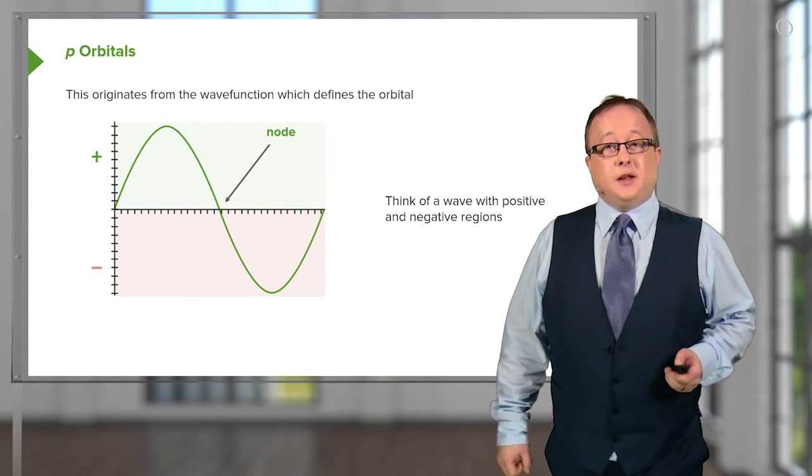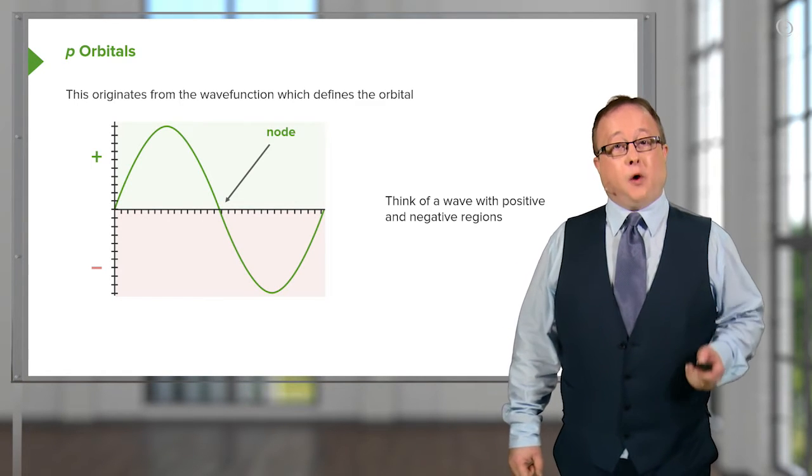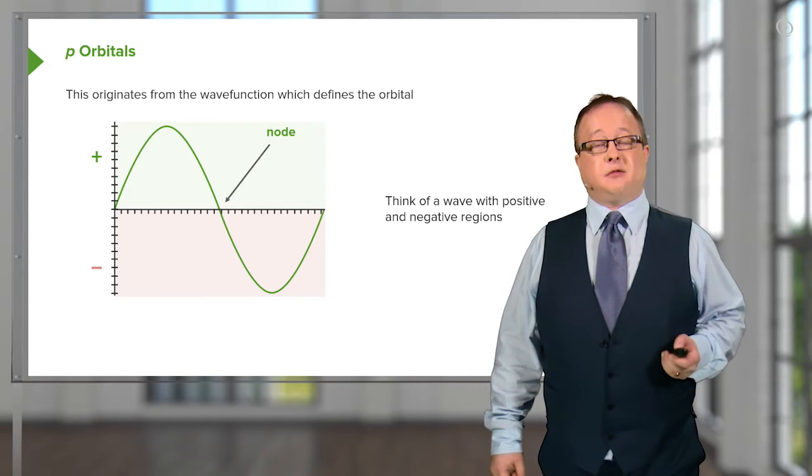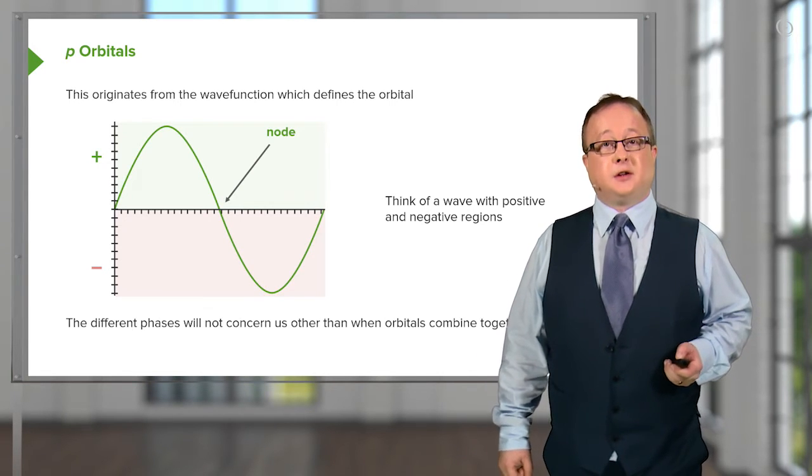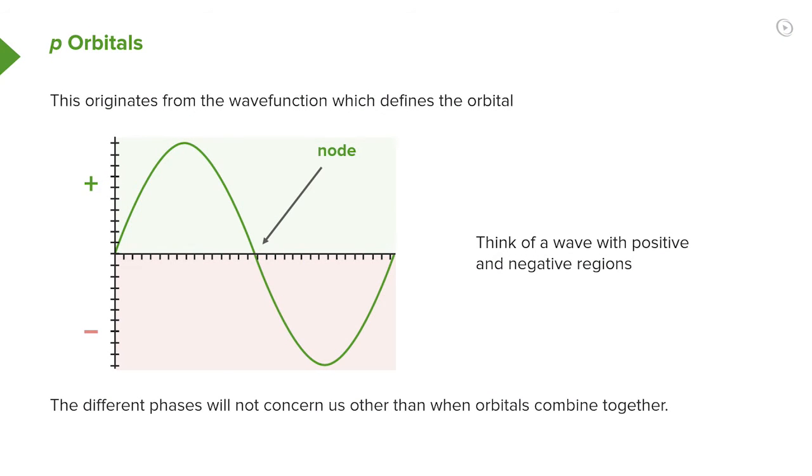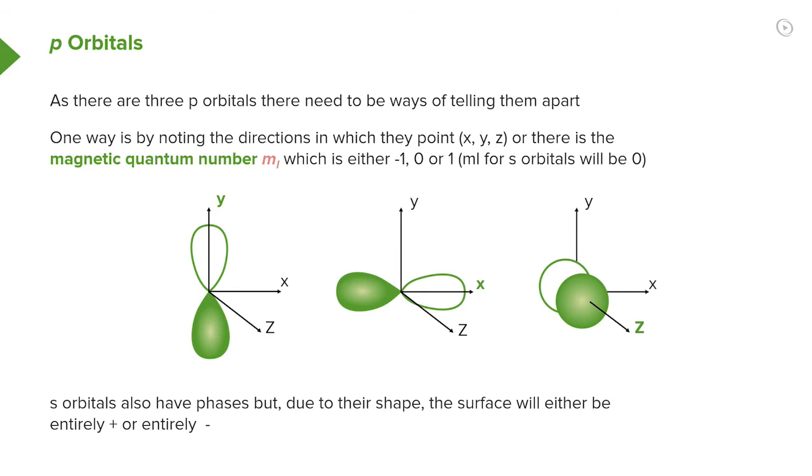So, if we think of an electron as a wave with positive and negative regions, we can think about the ideas of coherence, constructive or destructive interference. So, as there are three p orbitals, there needs to be a way of telling them apart, because if you look here, you can see that they are degenerate. And by that, what I'm talking about is the idea that you can superimpose one on the other by a simple rotation around 90 degrees.